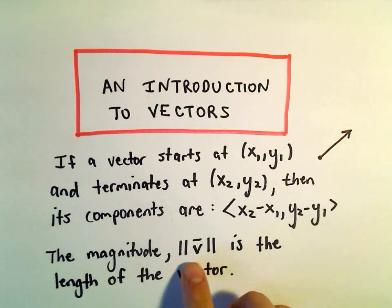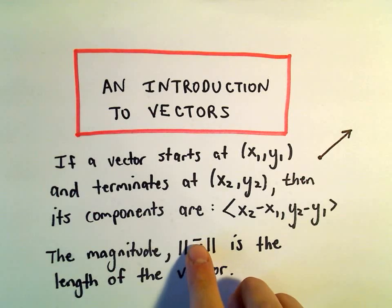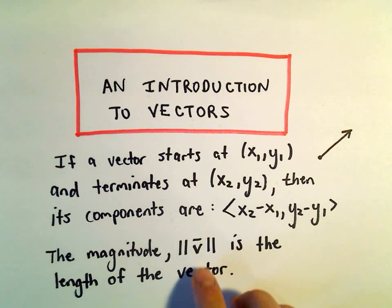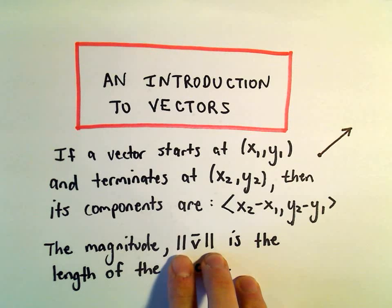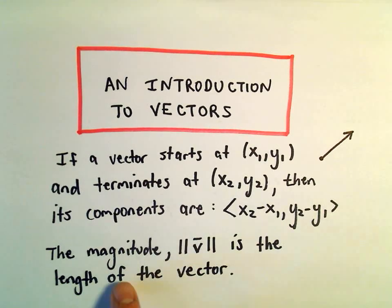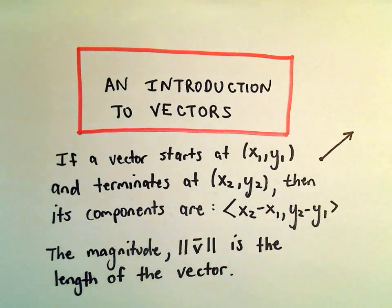The magnitude of our vector v—oftentimes when you write vectors you'll either make them bold or put a little line over them to indicate that they're a vector, I may accidentally forget to put the little line at times, but hopefully the context will be clear. When you put it in double bars, that's known as the magnitude, or the length of the vector.